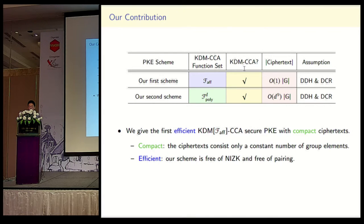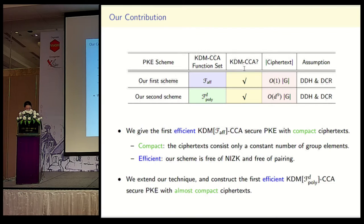So in this work, we work on the design of KDM-CCA PKE schemes. We give the first efficient KDM-CCA secure PKE for affine functions with compact ciphertexts — consisting of only a constant number of group elements — and our scheme is free of NIZKs and free of pairings. We also extend our technique to construct the first efficient KDM-CCA secure PKE for polynomial functions with almost compact ciphertexts.